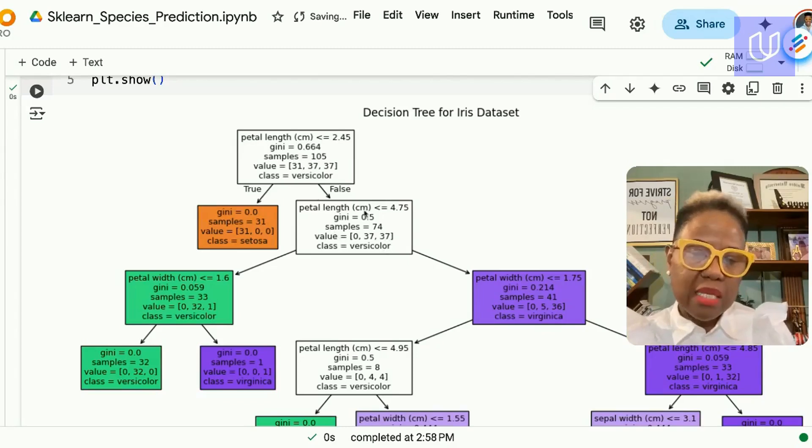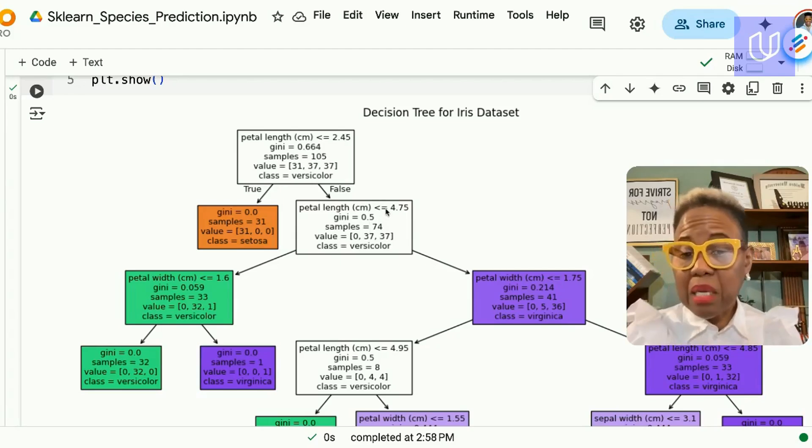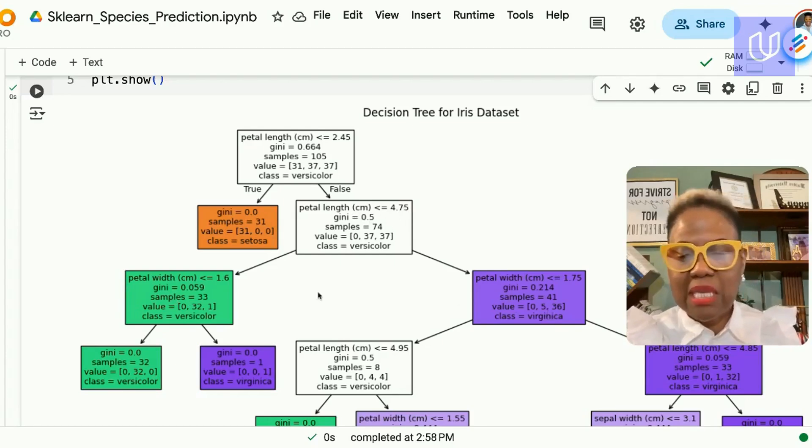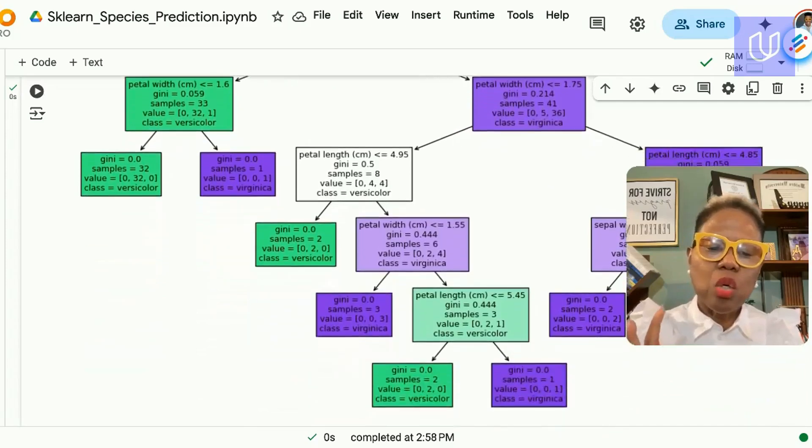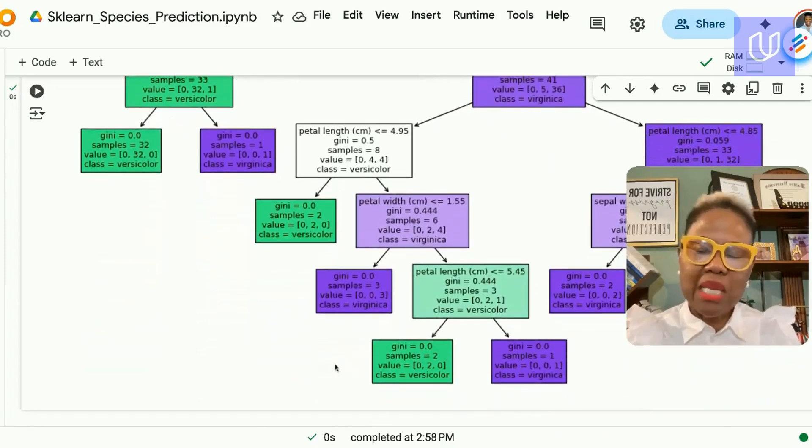Anything above that was put into this versicolor class that was further divided based on if the petal length was less than or equal to 4.75 then it was assigned to versicolor class. If it was more than 4.75 it was assigned to the virginica class and it kept doing that until all of the observations were classified into one of the three species types.